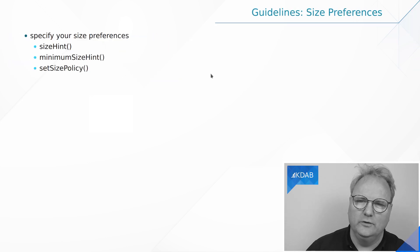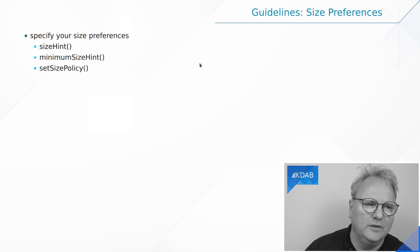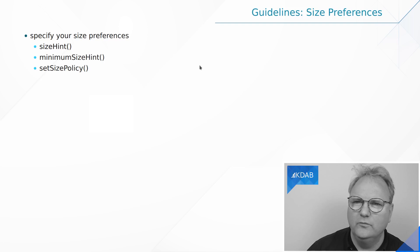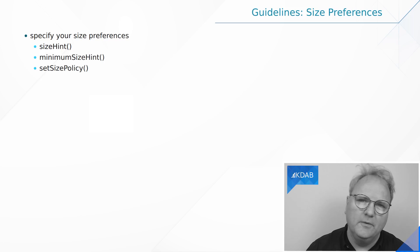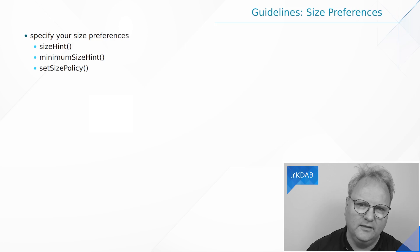Remember the previous episode? In that episode I talked about size hint, minimum size hint, and size policy. You need to specify those if you are creating a custom widget that is not just a composition of other widgets — where you can find the minimum and the size hint from just asking the layout manager. But if you're creating your own car battery widget, then what size should it have? What minimum size should it have? That's what you should be thinking about too.